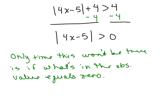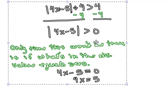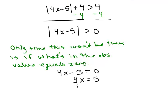So the only time this won't be true is if what's inside the absolute value actually equals 0. What's inside? 4X minus 5. So set 4X minus 5 equal to 0, giving 4X equals 5. Divide both sides by 4: X equals 5 fourths. The answer to this problem is everything except that number — every single number except 5 fourths.